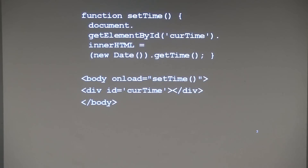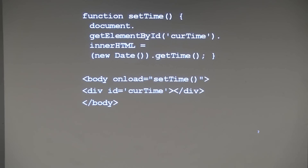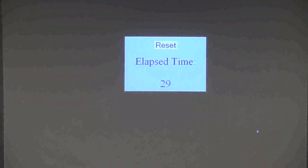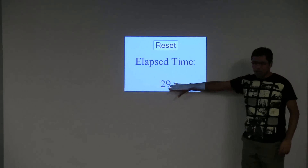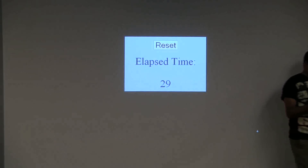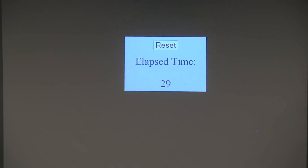It prints out the time, but how many times? Once. It prints the time at which the computation started. But if I wanted to build something like a timer that keeps incrementing — 29, 30, 31, 32 — that's not going to work because that computation runs only once. So we'd like a function that runs multiple times.